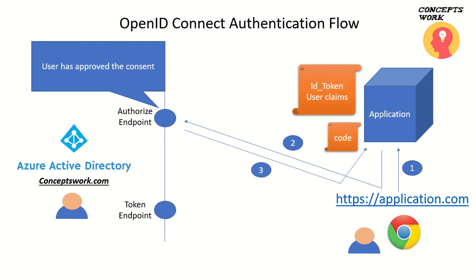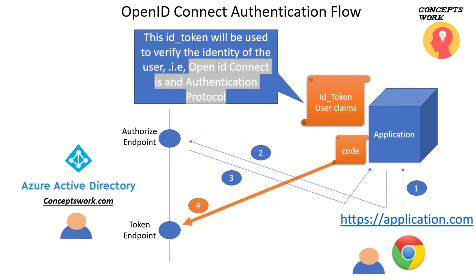Once the user has approved the consent, in OpenID Connect both an ID token and code will be sent to your application — which was not the case with OAuth 2.0 authorization code flow, where only code is sent back. In OpenID Connect, an ID token containing user claims is also sent. It is then the responsibility of your application to get this ID token verified with the help of Azure AD, and that is the authentication part happening, which is why OpenID Connect is an authentication protocol.